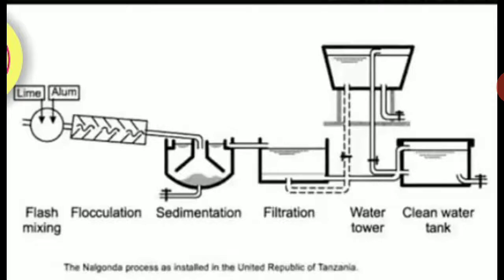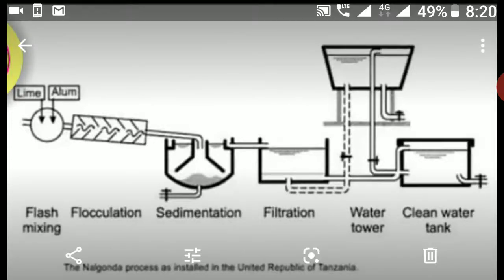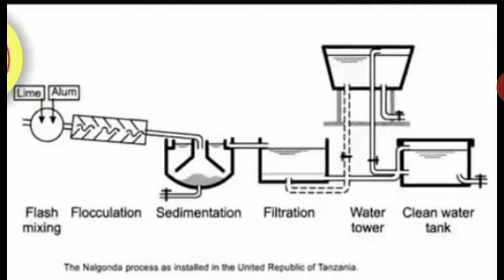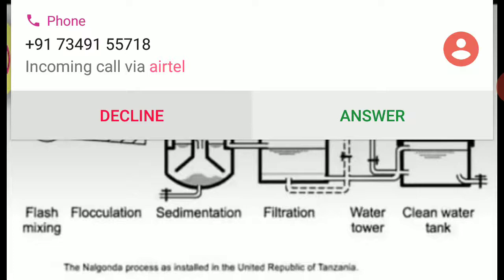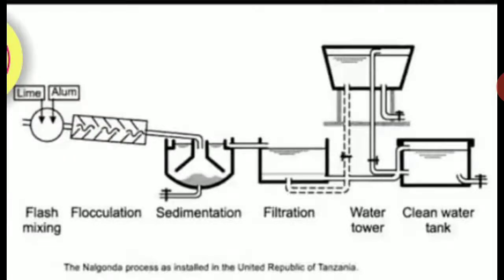In the sedimentation tank, the excess fluoride content settles down and is washed off through an outlet provided at the bottom. Only pure water is supplied to the filtration tank where the filtration process takes place. The filtered water is then pumped into the overhead tank for storage and directly supplied to the public. This is the Nalgonda process for defluoridation — the removal of excess fluoride.